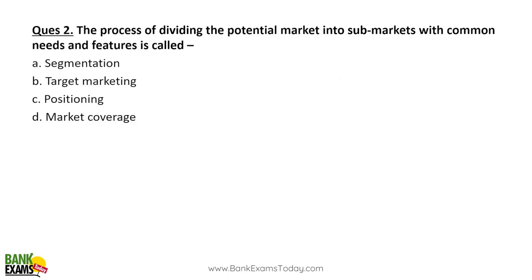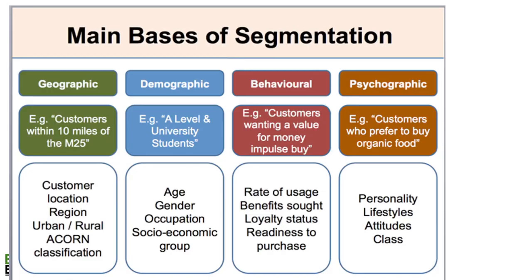Next question: The process of dividing the potential market into sub-markets with common needs and features is called what? The options are target marketing, positioning, market coverage, or segmentation. The answer is segmentation.